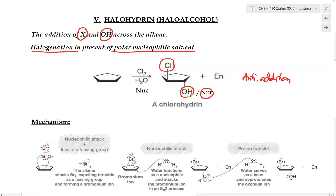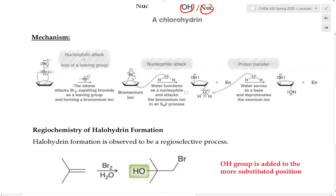The two groups are being added on different sides of the double bond, and this will also produce the other enantiomer where the chlorine is pointed down and the OH group is pointed up. These two products are enantiomers of each other. The mechanism of this reaction is very similar to the halogenation reaction mechanism we have already seen.